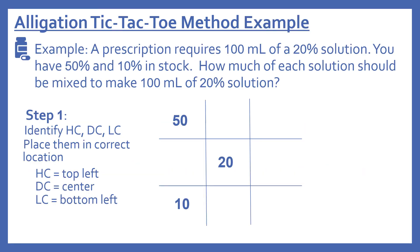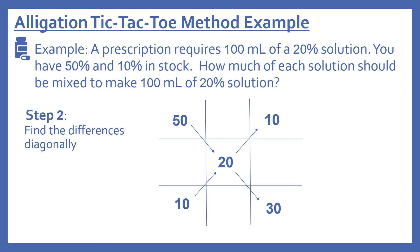Now we'll go through the tic-tac-toe method with the same example. A prescription requires 100 milliliters of a 20% solution. You have 50% and 10% in stock. How much of each solution should be mixed to make 100 milliliters of 20% solution? First we identify the high concentration, desired concentration, and low concentration and place them in the tic-tac-toe grid. The high concentration — 50 — goes in the top left, the desired concentration — 20 — goes in the center, and the low concentration — 10 — goes in the bottom left. Now we find the differences diagonally: the difference between 50 and 20 gives us 30, placed in the bottom right; diagonally for the low concentration, the difference between 10 and 20 gives us 10, placed in the top right.